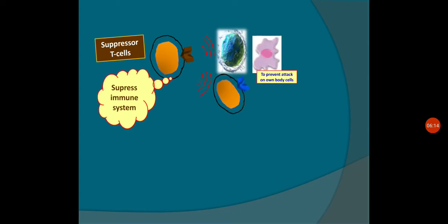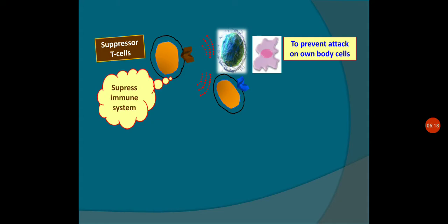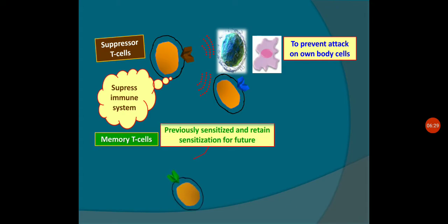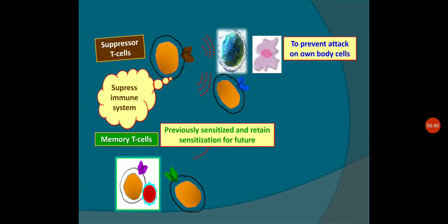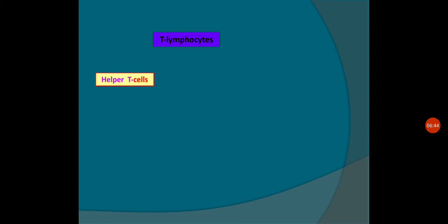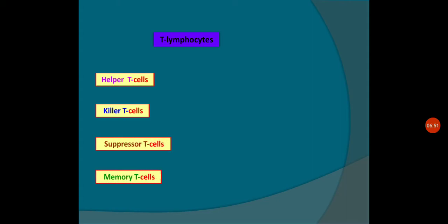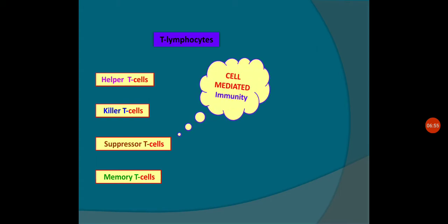The third type is the suppressor T-cell, which suppresses the immune system to prevent attack on the body's own cells. Hyperactivation of the immune system can damage our body, so this must be prevented. The memory cells, based on previously sensitized and retained information, are going to deal with the pathogen upon re-exposure. This covers the cell-mediated immunity — how immunity is provided by the wide variety of T-lymphocyte cells.